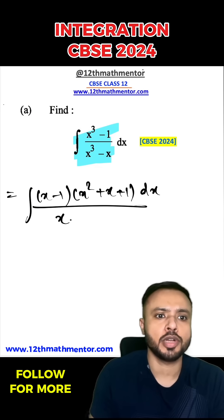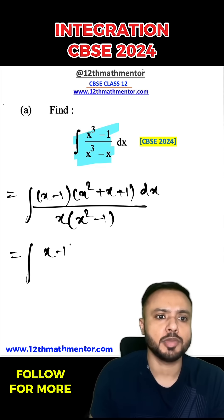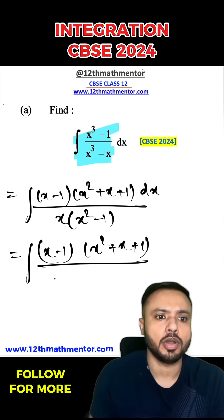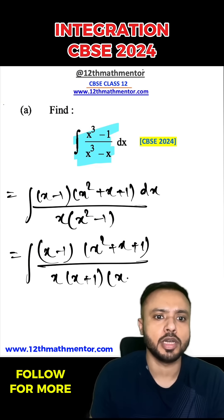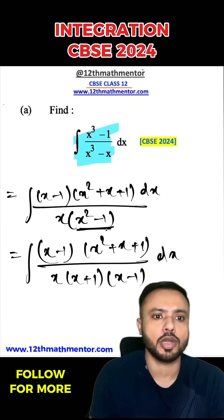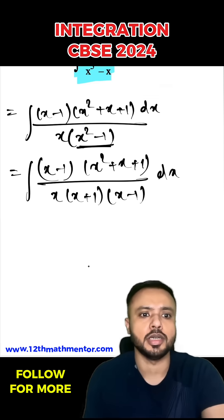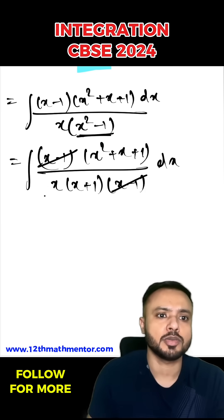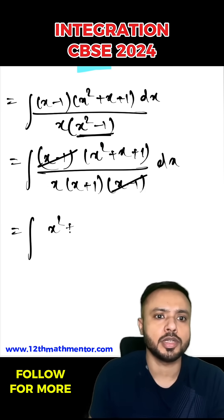In the denominator, I'm going to take x common, so I can write it as x(x² - 1), which gives x(x + 1)(x - 1) using the a² - b² identity. So the expression becomes (x - 1)(x² + x + 1) / [x(x + 1)(x - 1)] dx. The (x - 1) terms cancel, leaving (x² + x + 1) / [x(x + 1)] dx.